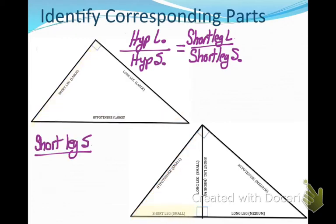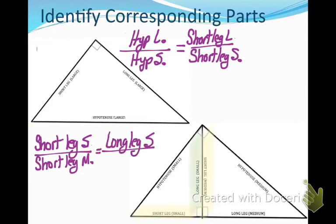What if we took the short leg of the small triangle and set it in a ratio with the short leg of the medium triangle? That would have to equal the same ratio as the long leg of the small triangle to the long leg of the medium triangle. So again, I'm setting up corresponding parts of two triangles in ratios and they have to equal the same ratio as any other two corresponding parts of those triangles.